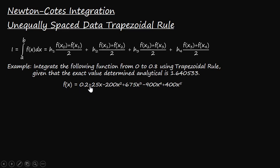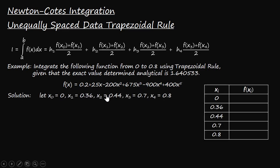Now let's use this formula to find the approximate integral of f(x) = 0.2 + 25x − 200x² + 675x³ − 900x⁴ + 400x⁵ from 0 to 0.8. We are also given that the exact analytical value of this integral is 1.640533. Let's divide the given interval from 0 to 0.8 into four sub-intervals.